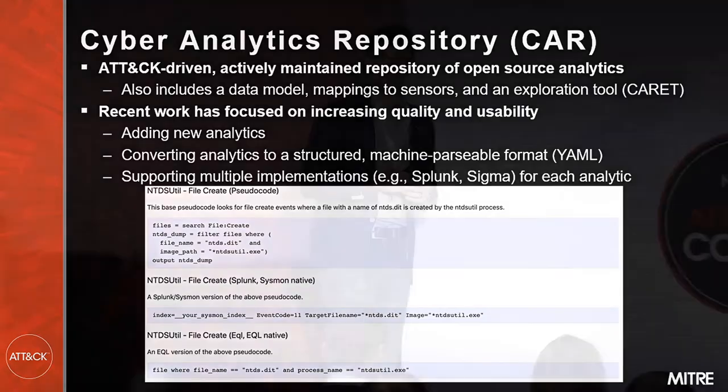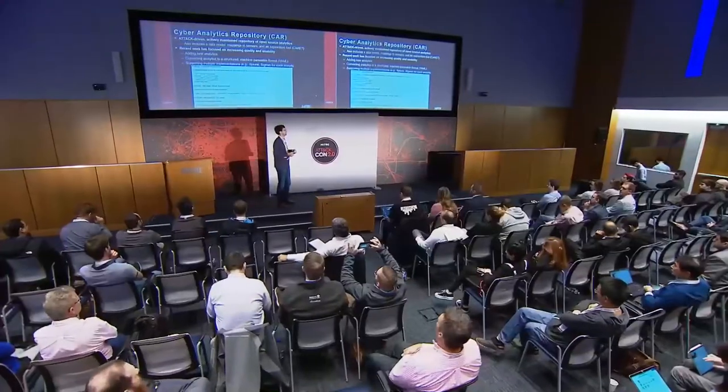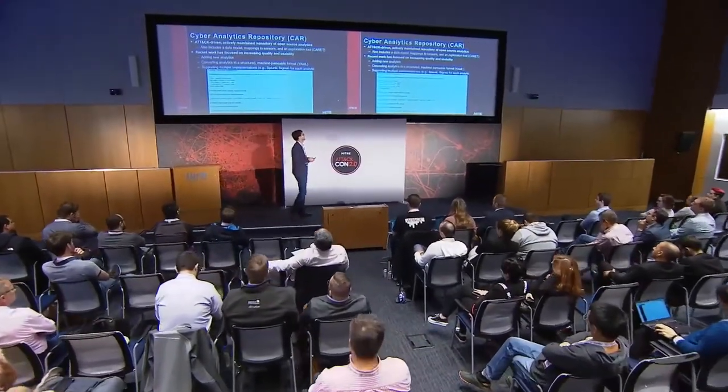Besides analytics, I think we have some interesting things that a lot of people don't have with regards to analytic repositories. We have a data model that allows you to do vendor-agnostic mappings, and then you can use those inside of your analytics. We also have mappings to sensors, although they're mostly outdated. And we have an exploration tool called Carrot, which shows the relationships between sensors, data sources, and analytics.